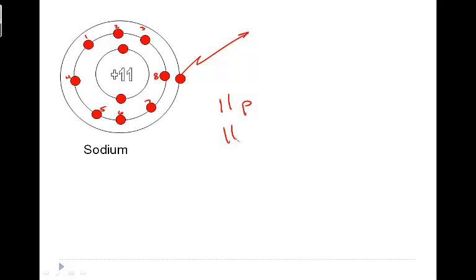Well, if we get rid of an electron, we now only have ten. Plus eleven, minus ten, is a positive one charge.